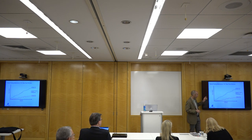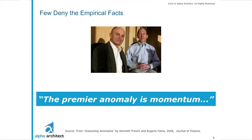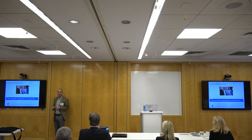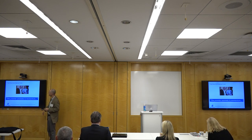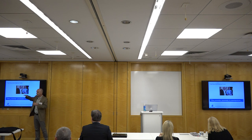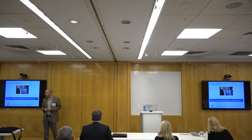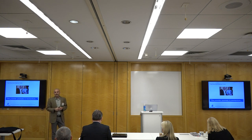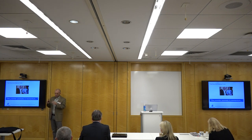This form of momentum — cross-sectional momentum — is what has caused all the hubbub in academic literature. This is what generates the momentum factor in the Fama-French regression models. These two gentlemen, Eugene Fama and Ken French, who are basically huge believers in the efficient market hypothesis, have finally admitted that cross-sectional momentum is basically the premier king of anomalies. We cannot explain it with rational risk models.